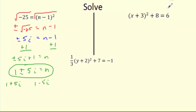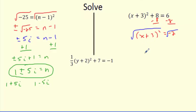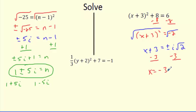For (x plus 3) squared plus 8 equals 6: subtract 8 from both sides to get (x plus 3) squared equals negative 2. Square root both sides — the square cancels on the left, leaving x plus 3, and the right becomes plus or minus i radical 2 (since 2 doesn't simplify). Subtract 3 from both sides: the answer is negative 3 plus or minus i radical 2.